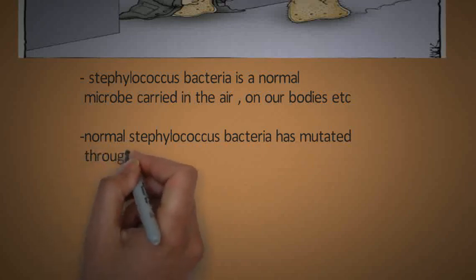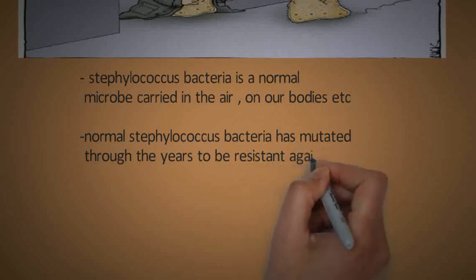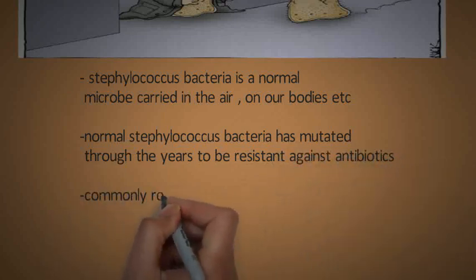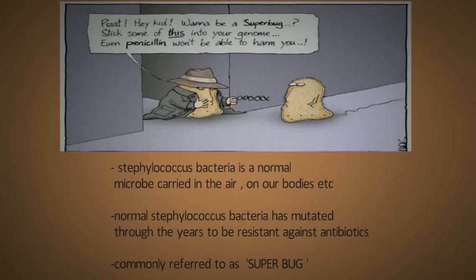Mutation is a sudden heritable change that occurs in the genotype of an organism. When the bacteria mutates, it gains the capacity to resist antibiotics. It's commonly known as the superbug.